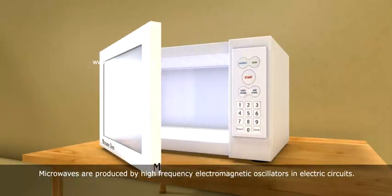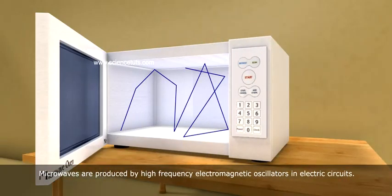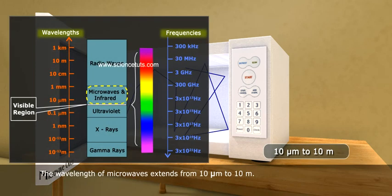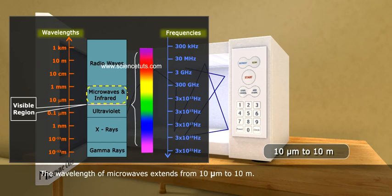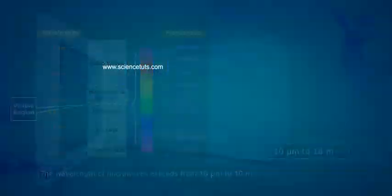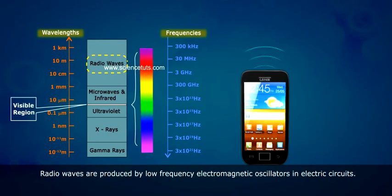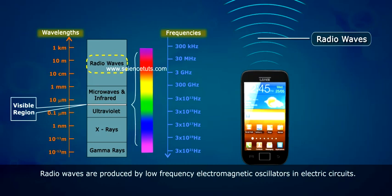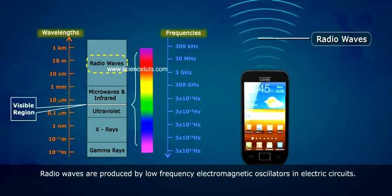Microwaves are produced by high-frequency electromagnetic oscillators in electric circuits. The wavelength of microwaves extends from 10 micrometres to 10 metres.